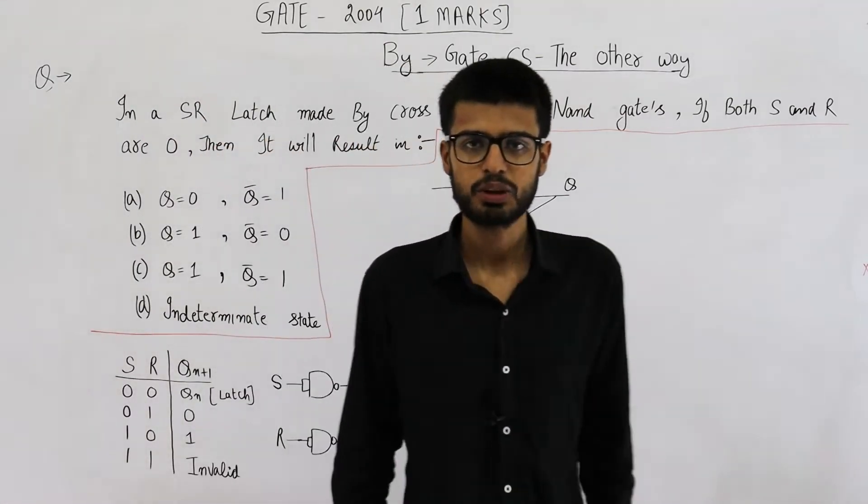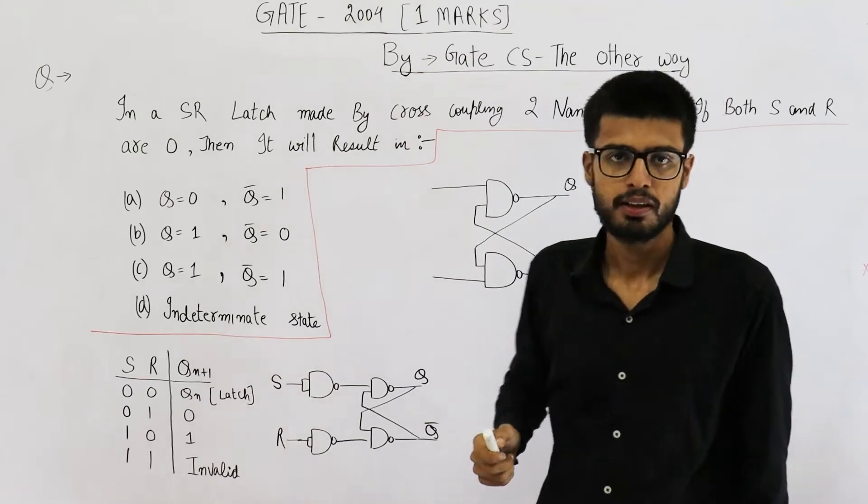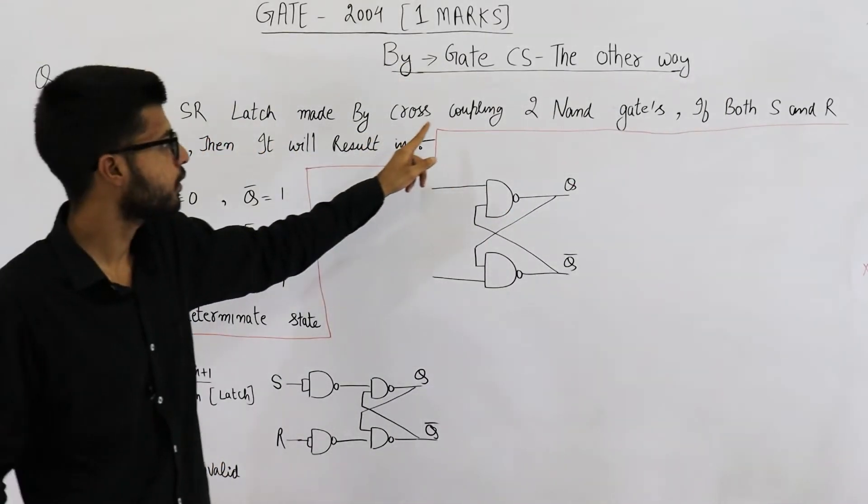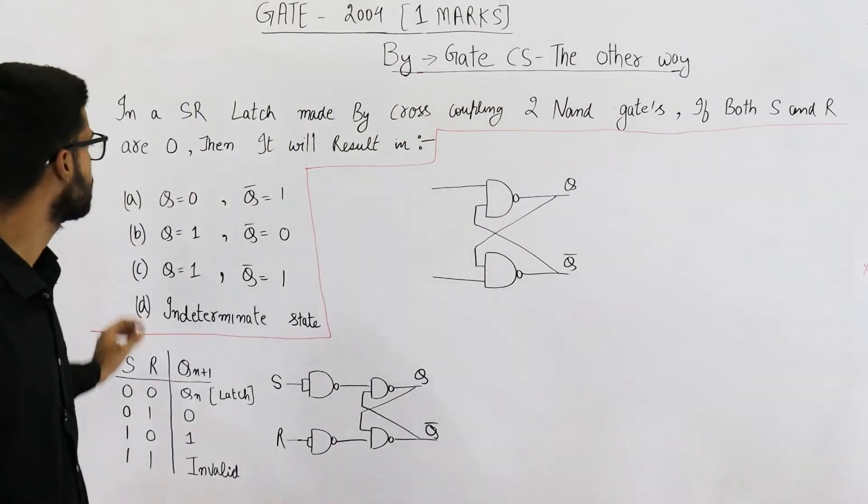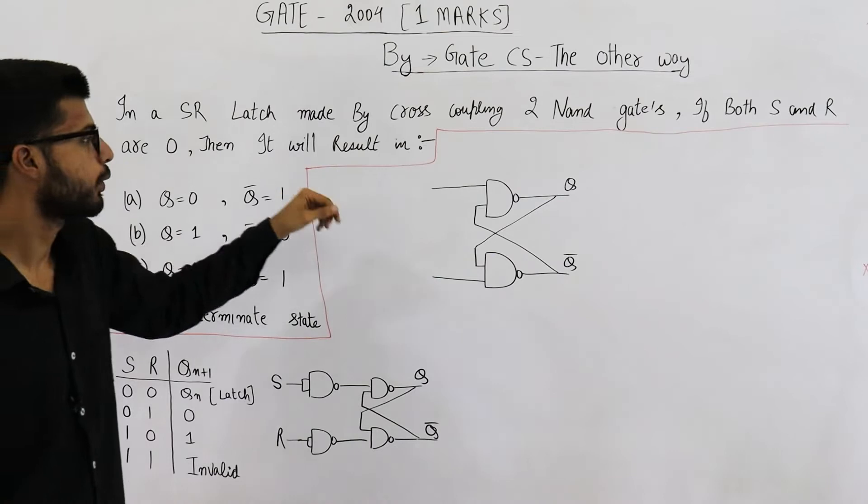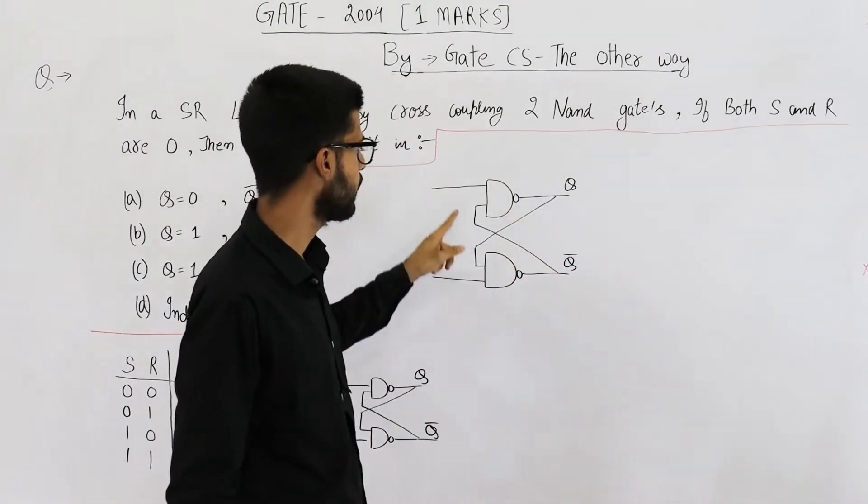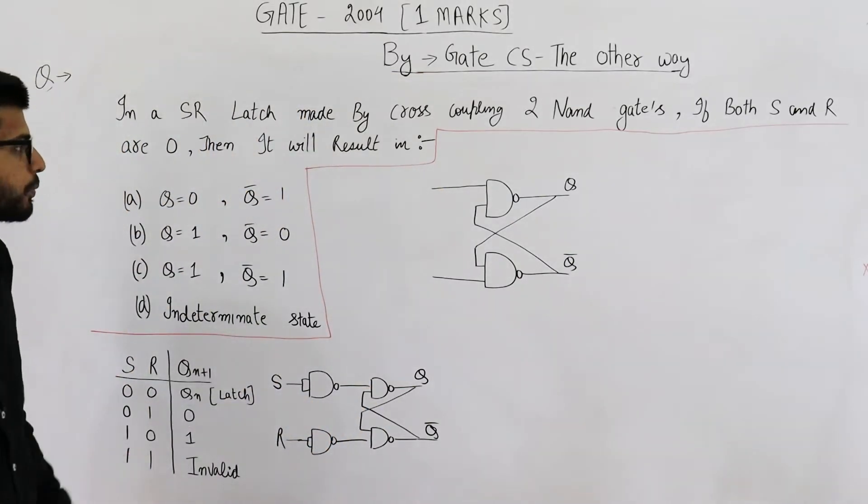Hello people, welcome back. The question is from gate 2004 exam. It's for one mark. The statement says, in a SR latch made by cross coupling two NAND gates, if both S and R are 0, then it will result in. So we need to find the value of Q and Q bar if both the inputs are 0. These are the four options given.